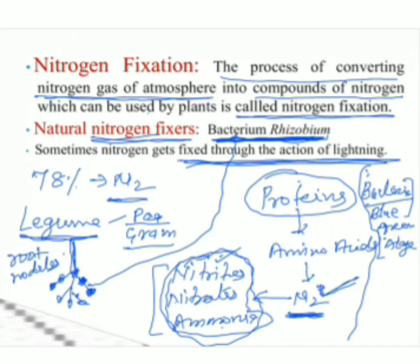So the natural nitrogen fixers are: Rhizobium bacteria, some bacteria present in soil, blue-green algae, and lightning. Through these processes, atmospheric nitrogen is converted into compounds — nitrites, nitrates, and ammonia — which plants can absorb from soil. This process is called nitrogen fixation.